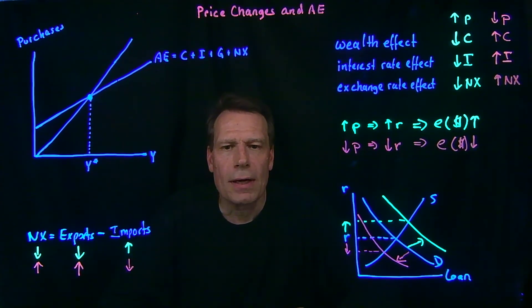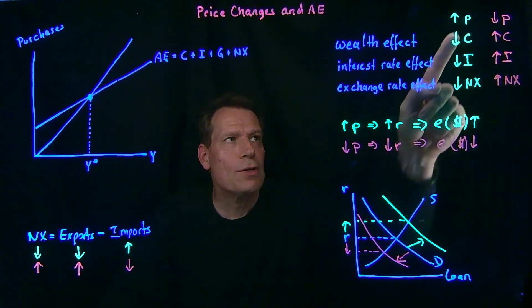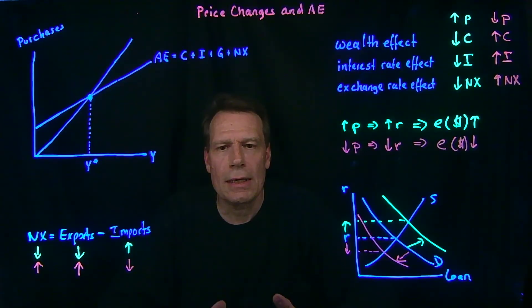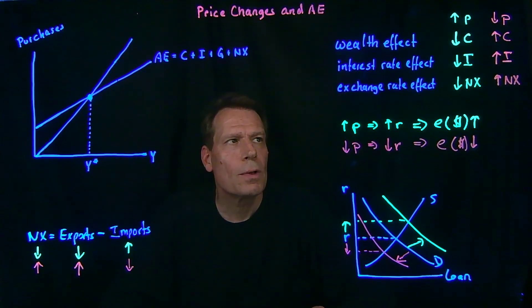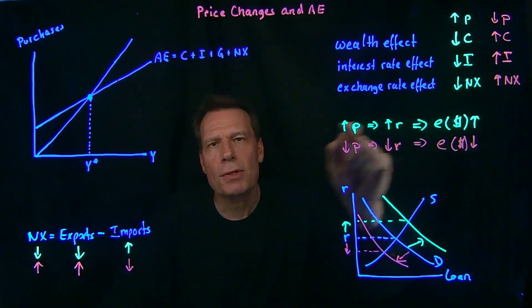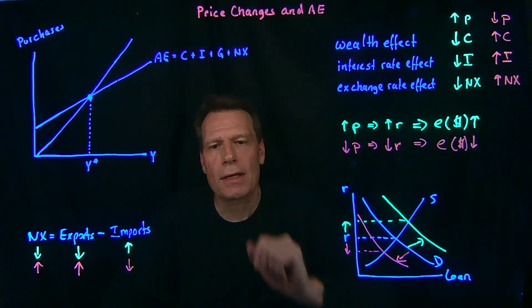So now we have an idea of how changing price levels in the economy will affect the different components of aggregate expenditure.